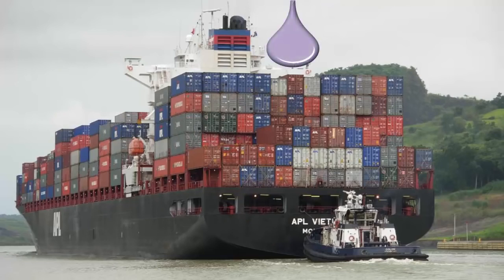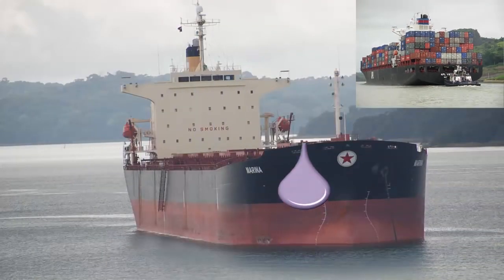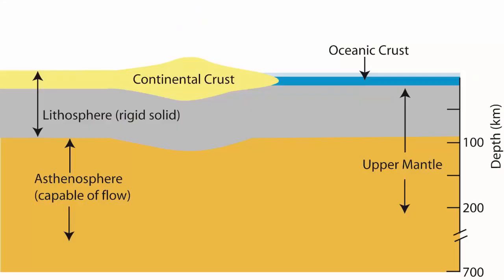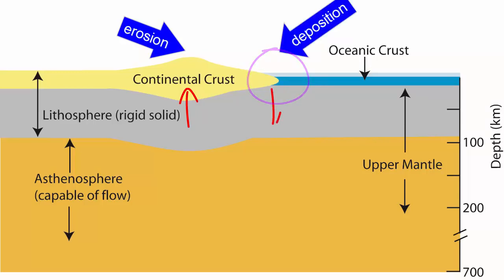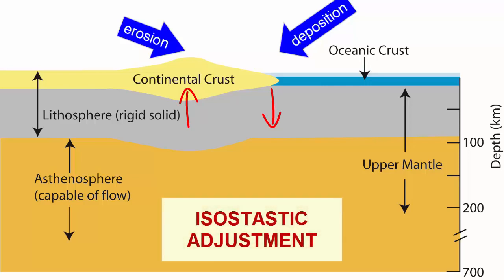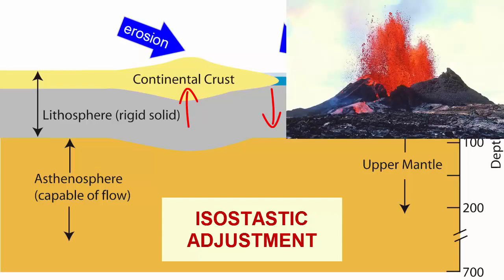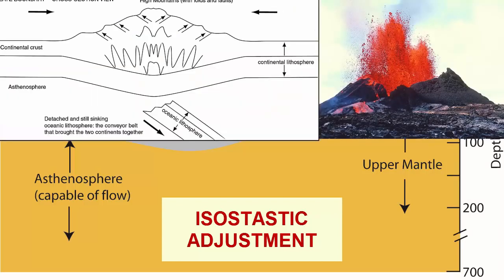When cargo is added to a cargo ship, it sinks lower into the water. When the cargo is removed, the ship rises. So what happens when the tops of mountains are eroded? Material is removed, so the crust rises upwards. And when the eroded sediment is carried to the coast and dumped on the edges of the continental shelf, the land there will sink under the weight. Earth's surface is continually rising and sinking isostatically as weight is removed or added by erosion, deposition, volcanic eruptions, mountain building processes, and other processes related to plate tectonics.